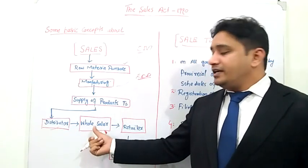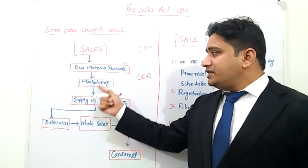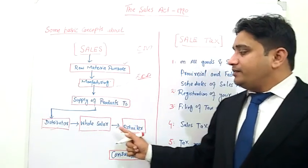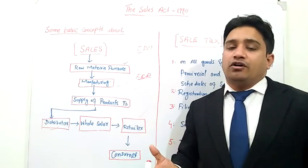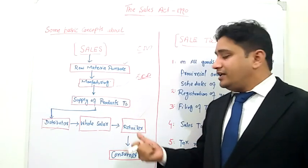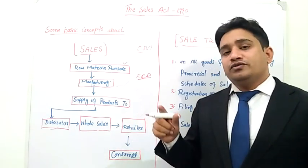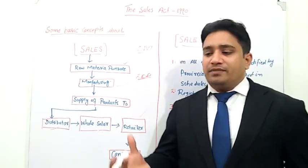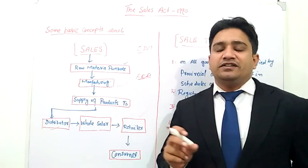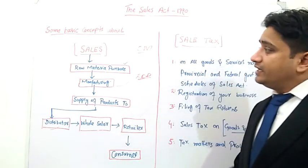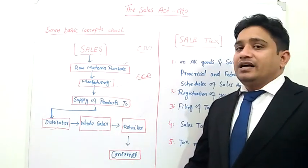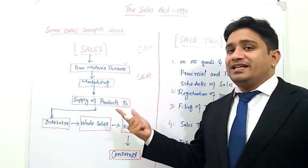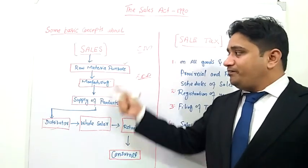At every stage — distributor, wholesaler, retailer — a tax has been applied. This stage is called retailing; a perfume shop, for example, is a retailer's workplace. The manufacturer sets the selling price, and the consumer makes the purchase. If a person is purchasing a product for business purpose — to resell — then what is applied is sales tax. That is the sales tax method.